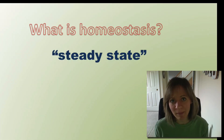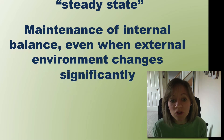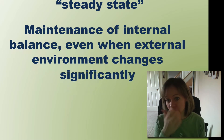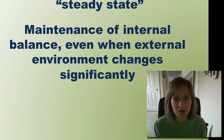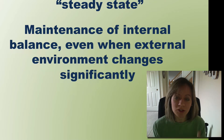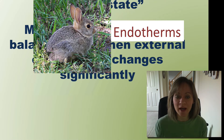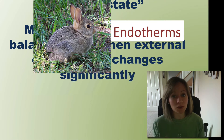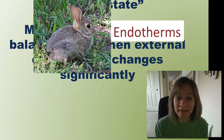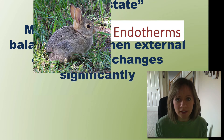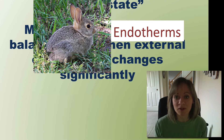But what does that mean? It's a maintenance of the internal balance, so even when the external environment is going to change significantly, that organism or that system maintains a balanced internal environment. When you hear that, you probably immediately think of an endotherm — like humans, even though it's zero degrees outside, we maintain our internal body temperature. And while that's true, you certainly need to understand that endotherms are not the only things that undergo homeostasis.